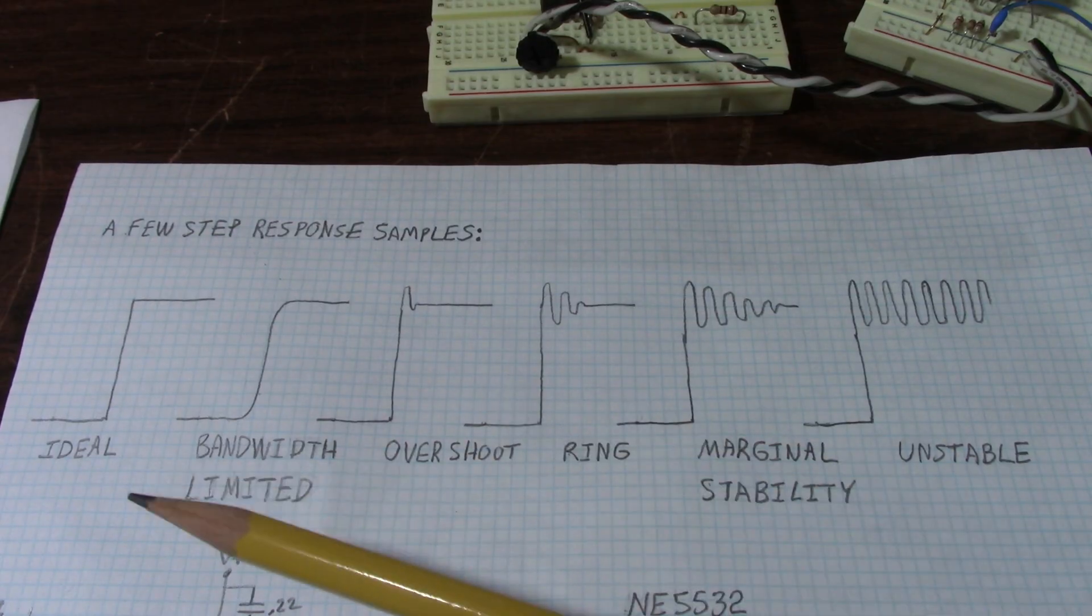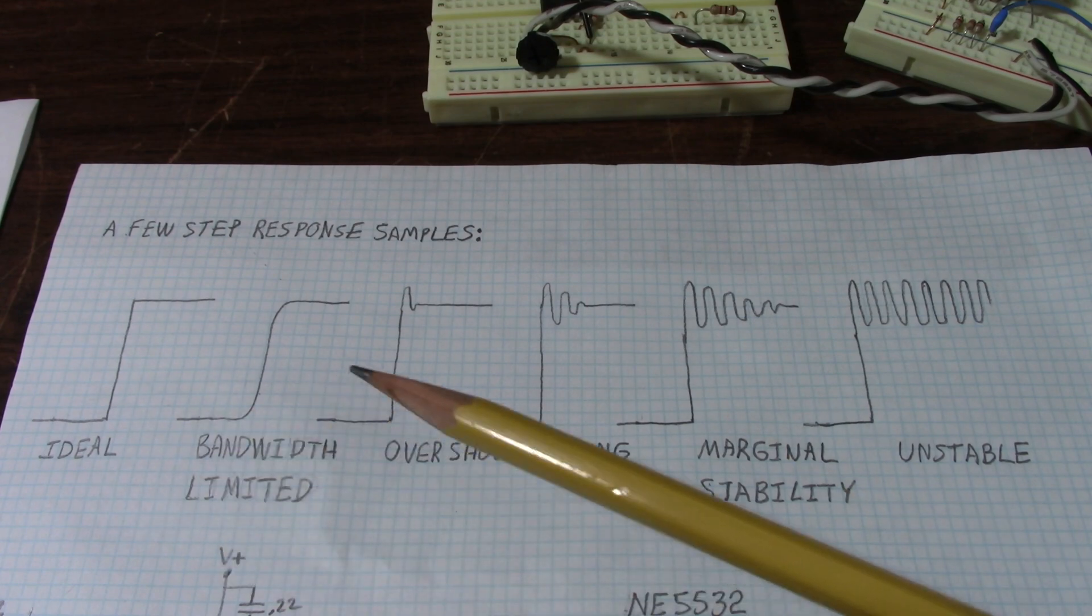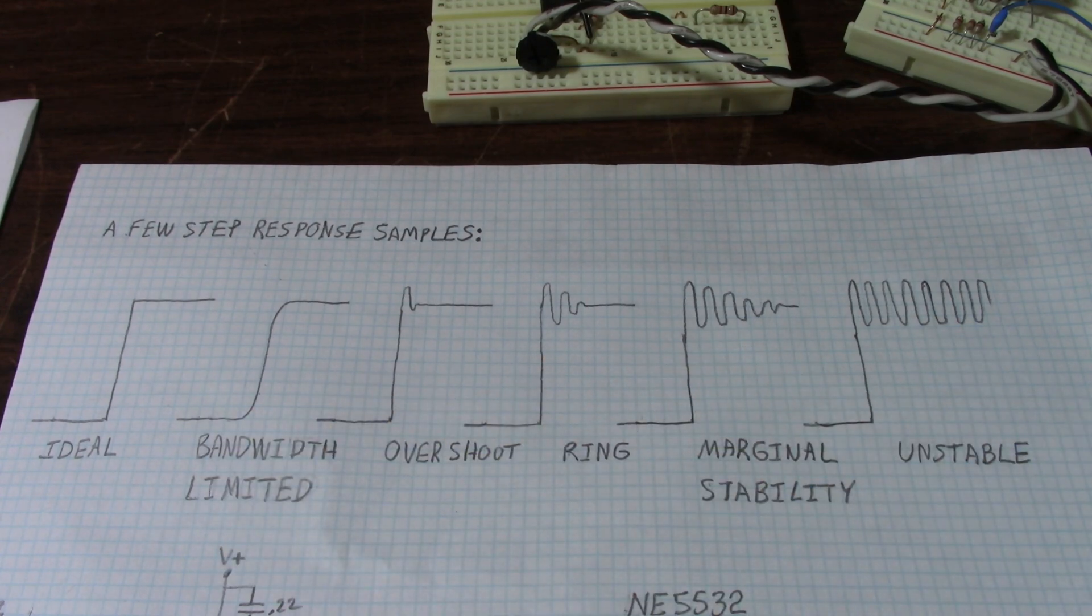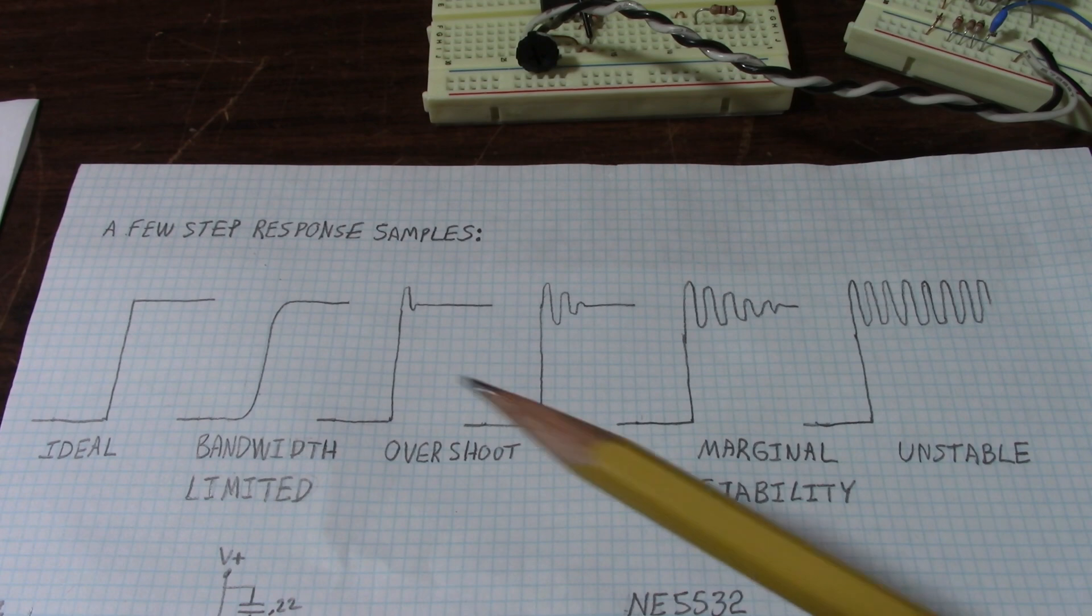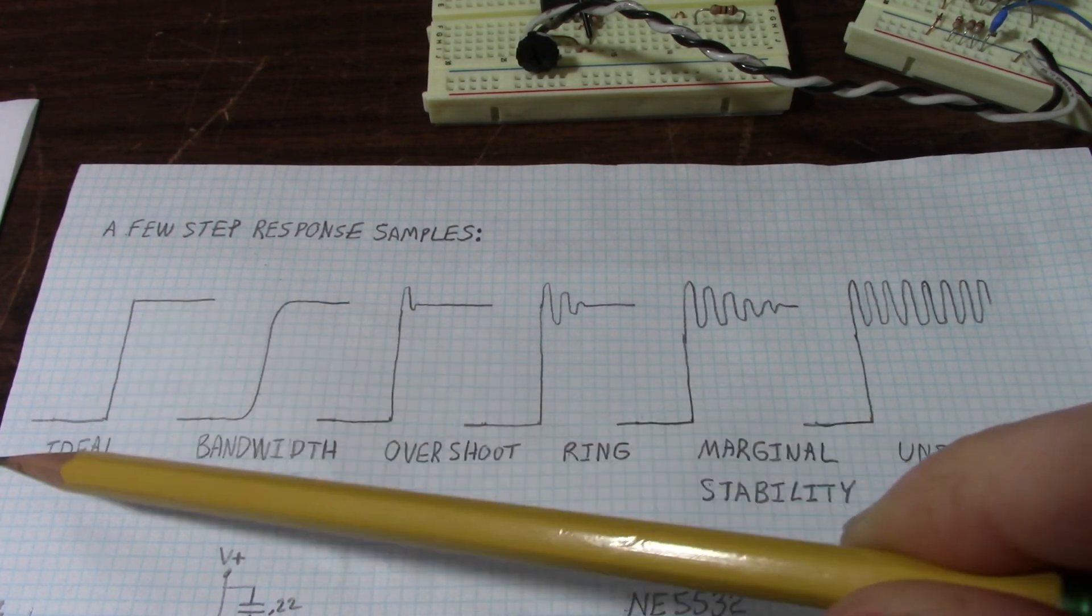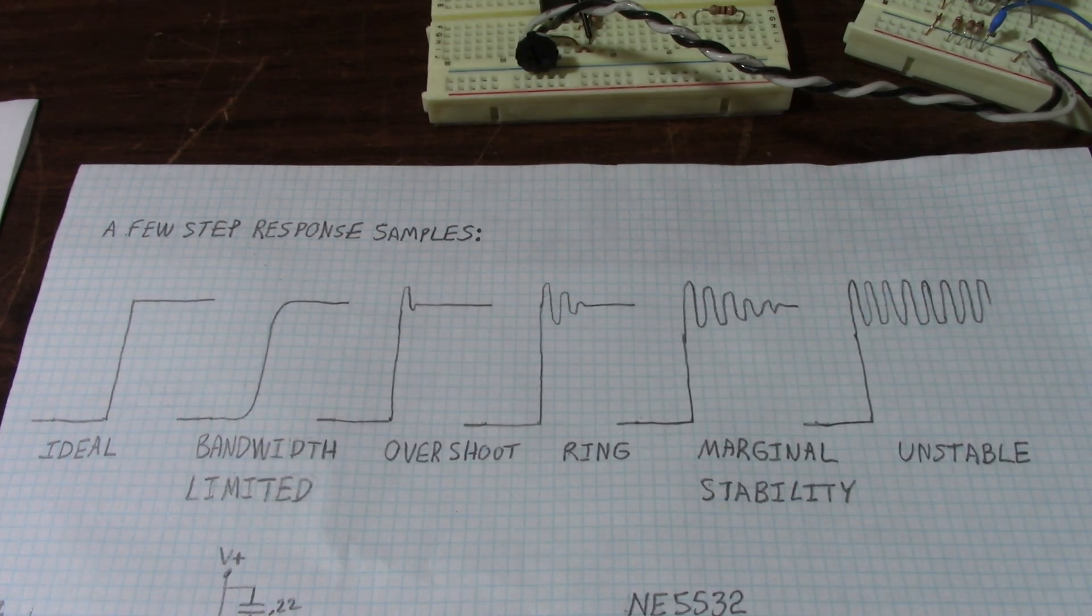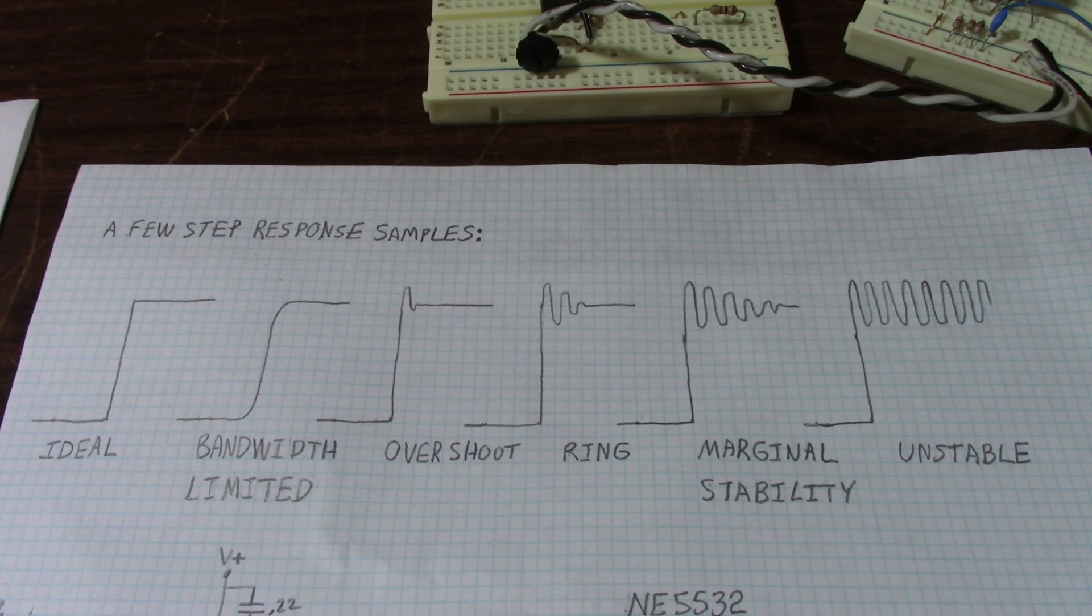We're just going to talk about step response with the operational amplifiers and kind of limit to some of the different types of responses I would expect to see. So here's a drawing of a few examples of output responses I would expect to see from a step response test. And there could be a lot more, but for this test I'm just looking for these types of responses. Now the first waveform here is ideal where you have nice squared off edges, instantaneous transition to the different voltage level. In the real world, of course, that can't be possible because nothing happens instantaneously.